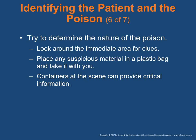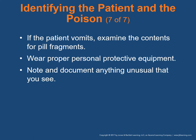Try to determine the nature of the poison. Look around the immediate area for clues — are there syringes, empty pill bottles? Place any suspicious material in a plastic bag and take it with you. If you can't match pills up to the bottle, bring the bottles and the pills. Containers at the scene can provide critical information. If the patient vomits, examine the contents for pill fragments. Make sure you wear proper PPE so you don't get vomit on yourself. Document anything unusual — documentation is always key.